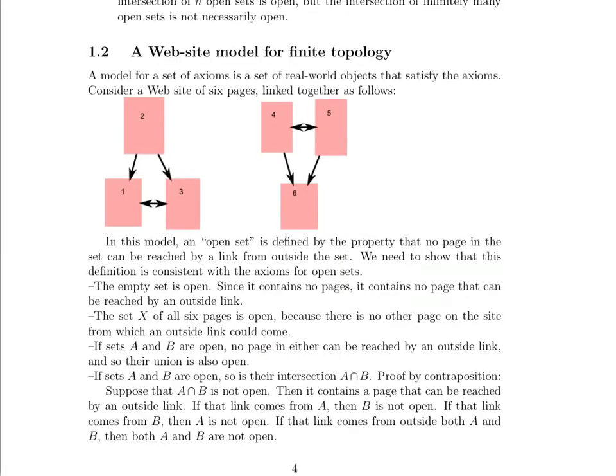Here's our finite set. It's a set of websites. Those are the elements in this particular set. So our set X that we're talking about are these websites, and they are numbered one through six.